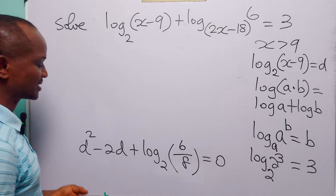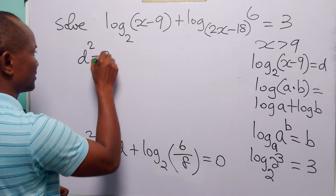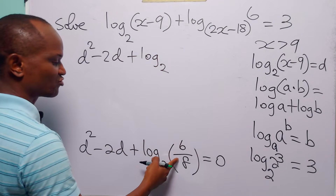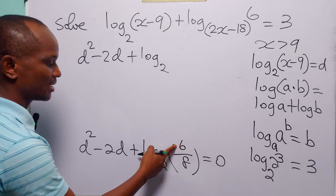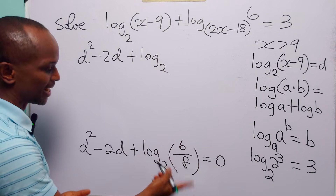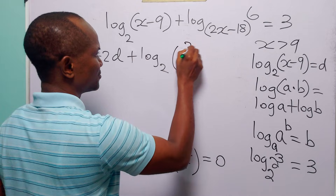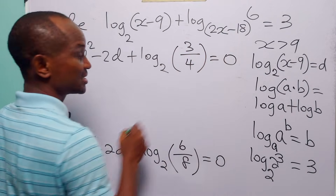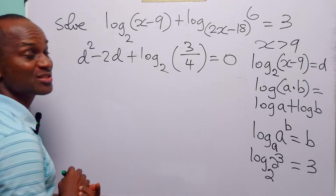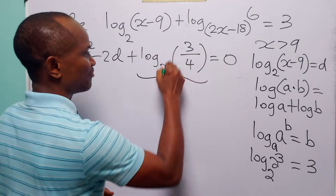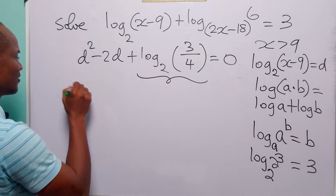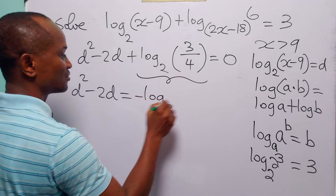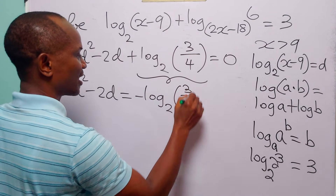So ultimately, we have the quadratic equation D squared minus 2D plus log to base 2 of 6 over 8 equals 0. Let us reduce 6 over 8 to its lowest terms by dividing numerator and denominator by 2: 6 divided by 2 is 3, and 8 divided by 2 is 4. So we have D squared minus 2D plus log to base 2 of 3 over 4 equals 0. To solve this quadratic, let us move this term to the right-hand side: D squared minus 2D equals minus log to base 2 of 3 over 4.